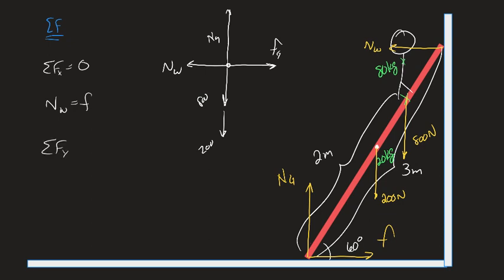And net force in the Y direction, this one I'm going to get more, but they still have to sum to be zero. And that's going to be normal force from the ground minus 200 minus 800 equals zero. That's going to be 1,000 newtons. So we know what the force is from the ground.